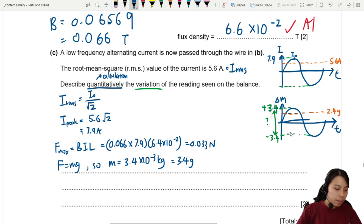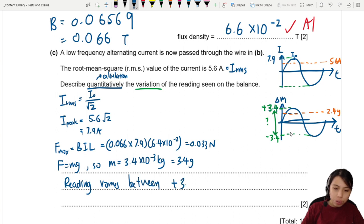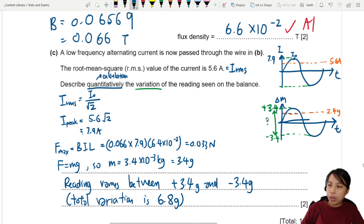So the conclusion that you can write here is total variation, right? You can show your working. So we say the reading fluctuates or changes or varies between 3.4 grams and negative 3.4 grams or you could say the total variation is double of 3.4 so 6.8 grams. From the highest all the way to the lowest.